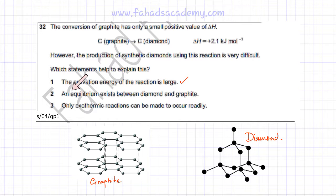The second statement states that an equilibrium exists between diamond and graphite. This statement is incorrect. The conversion from graphite to diamond or from diamond back to graphite is not very easy. So generally there won't be any equilibrium reactions taking place.